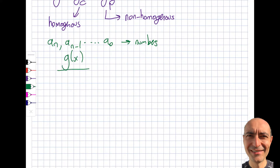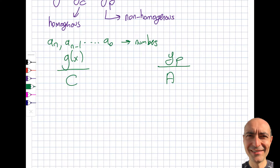I'll make a table showing G of X and the corresponding trial particular solution Y_p. If G of X is a constant, the trial solution looks like A — just a constant. If G of X is something like 2x + 5, then I'll try a solution in the form A·x + B.